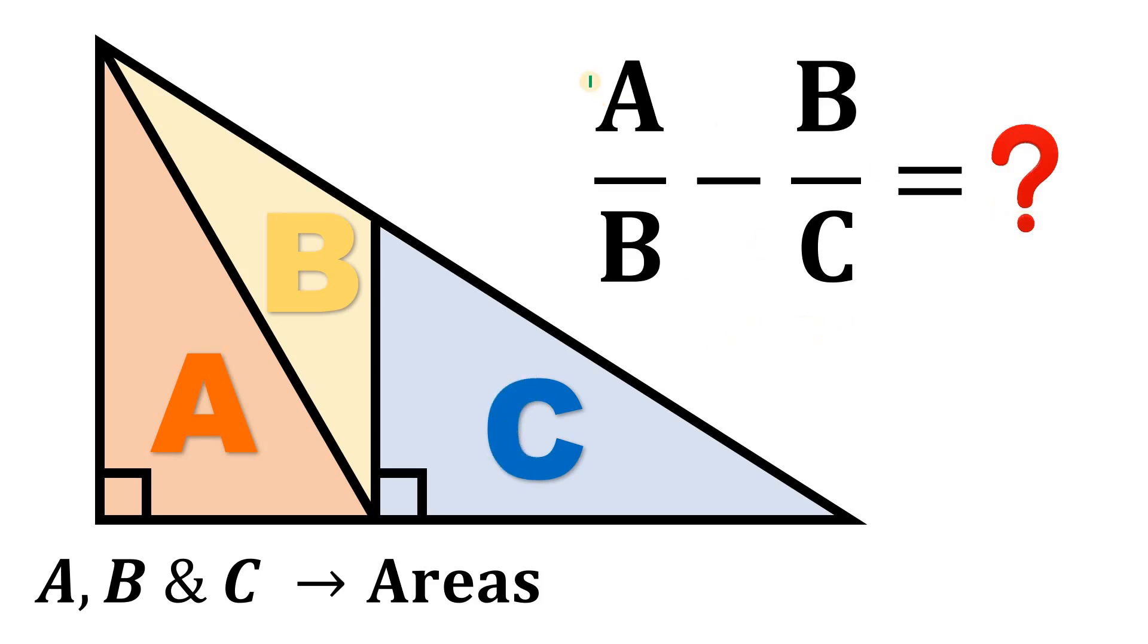Now the question, what is the numerical value of A over B minus B over C wherein A, B, C are all areas? Pause this video right now and see if you can answer this question because I will show you the solution in 3, 2, 1.